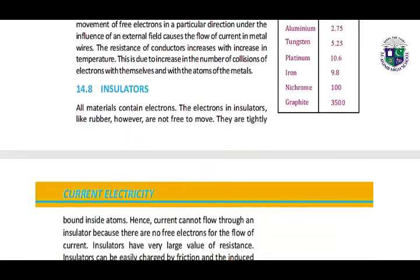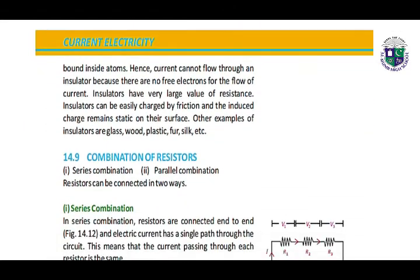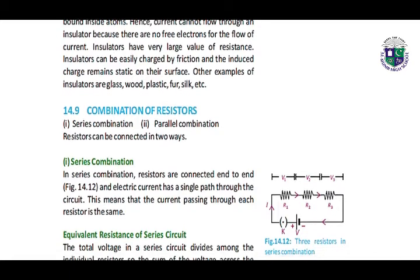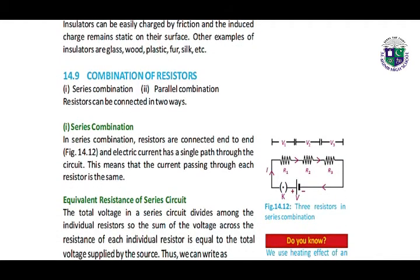What are insulators? All materials contain electrons. The electrons in insulators like rubber are not free to move — they are tightly bound inside atoms. Hence, current cannot flow in an insulator because there are no free electrons for the flow of current. Insulators have very large value of resistance. Insulators can be easily charged by friction and the induced charge remains static on their surface.